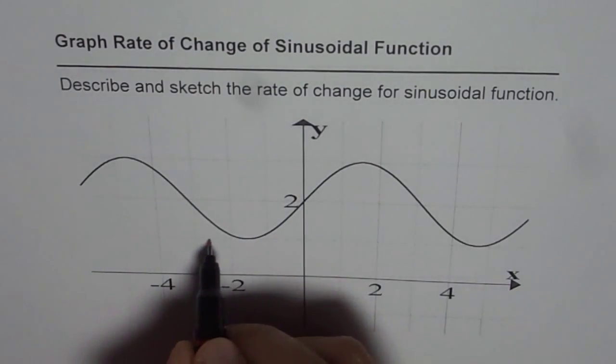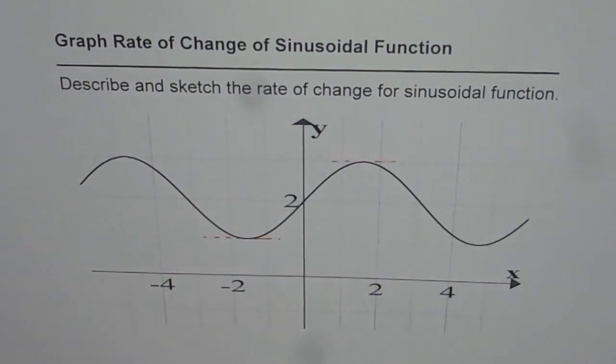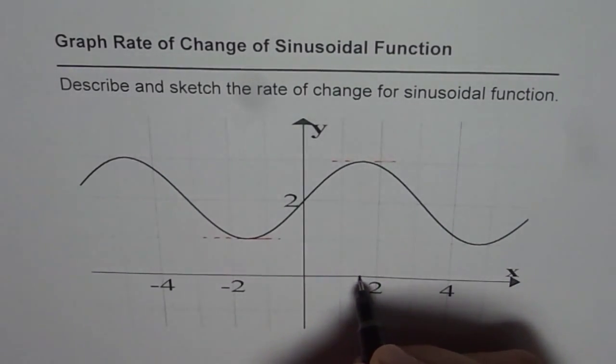As you can see here, if I draw a tangent line, the slope is going to be zero at both these points. So corresponding to these points, the rate of change will be zero.